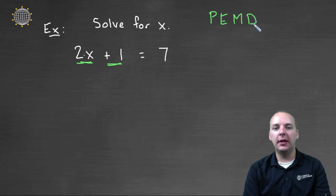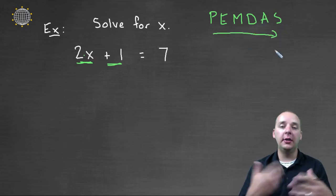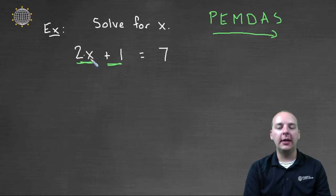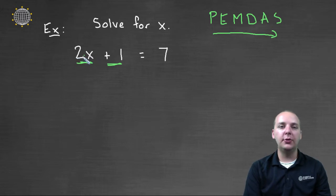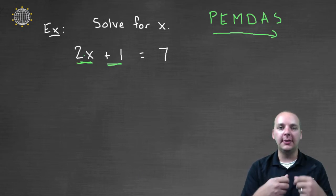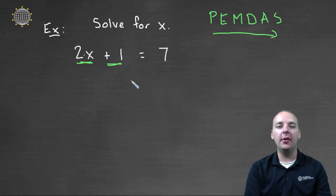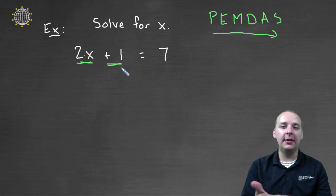Let's keep in mind our order of operations: parentheses, exponents, multiplication, division, addition, and subtraction — this is the order in which operations are applied. So if you were going to plug in a value for x, you would multiply it times two before you would add one. But as we unravel these things to solve for x, the first operation we're going to take care of is this plus one, because that was the last thing done to x.